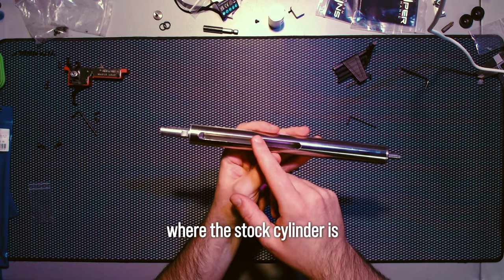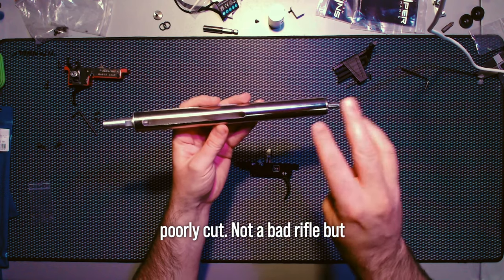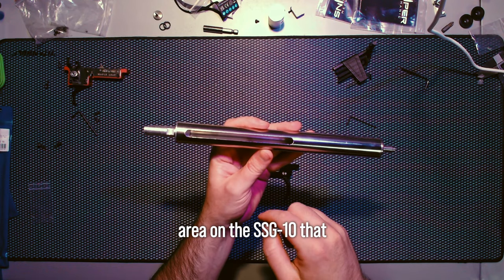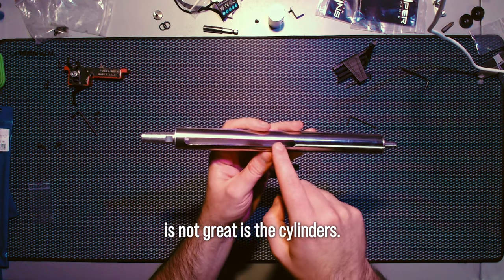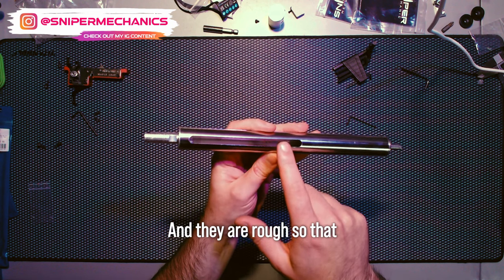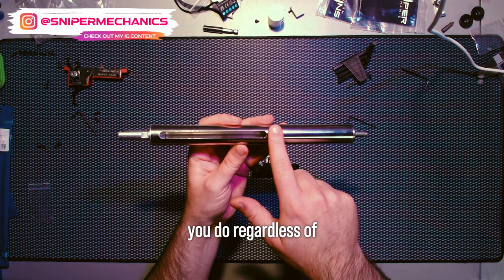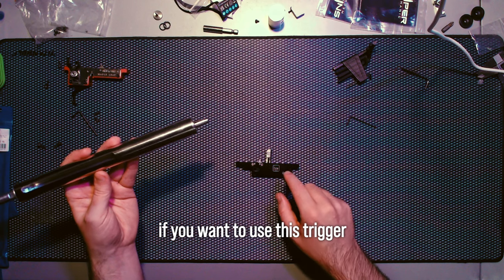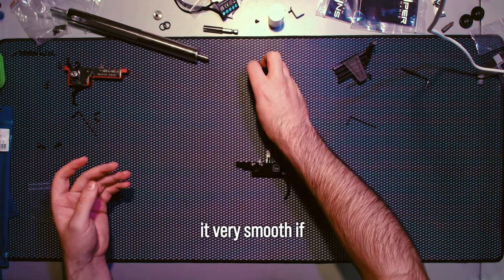Ideally if you're serious about building your rifle, you should be sanding and deburring this, especially on rifles like the SSG 10 where the stock cylinder is poorly cut. That should be something you do regardless of the trigger, but even more so if you want to use this trigger because it makes it very smooth.